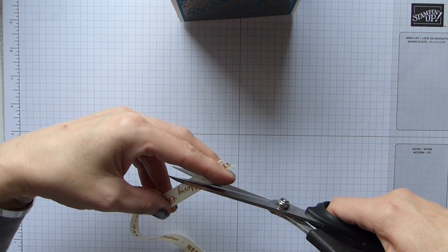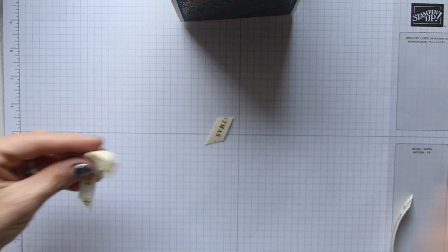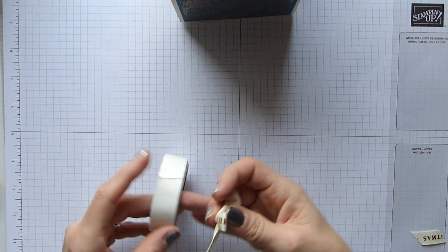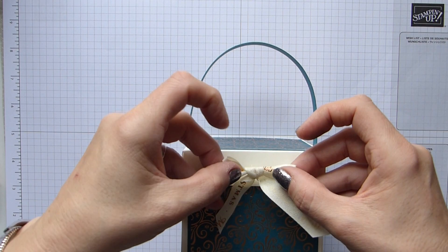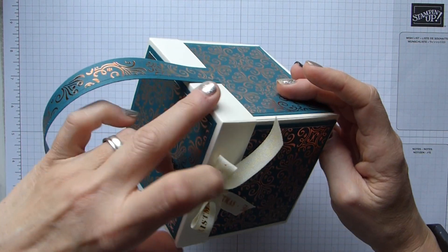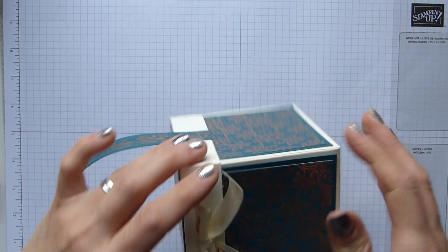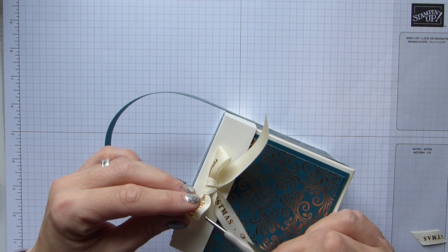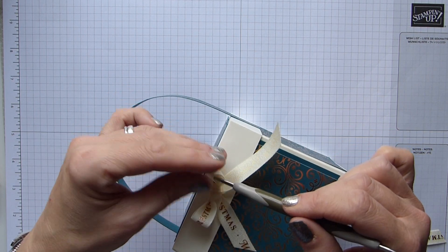And then exactly the same this side - eyeball it, wing it, stick it. So there's my handle, isn't it just gorgeous. So I then used the classic weave ribbon with the vanilla and copper, and I just made a bow.